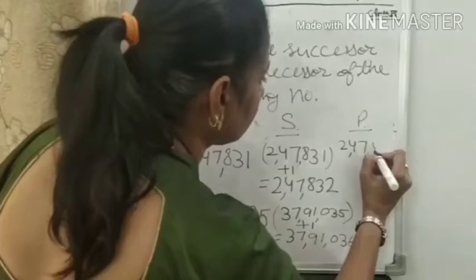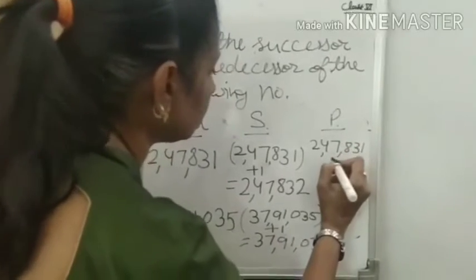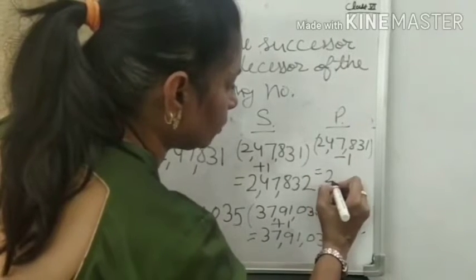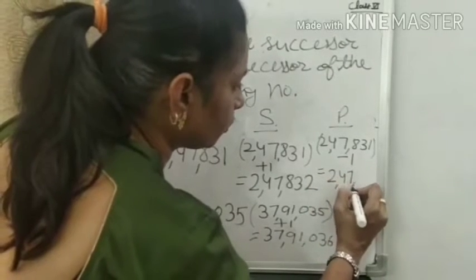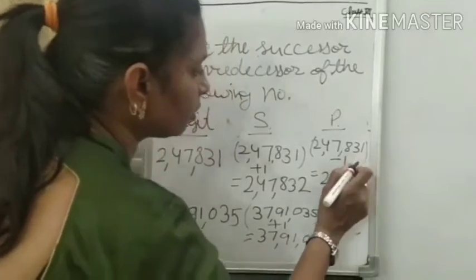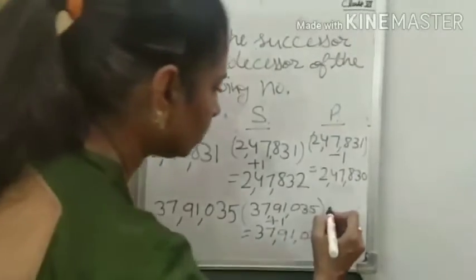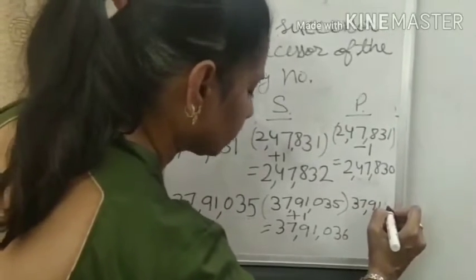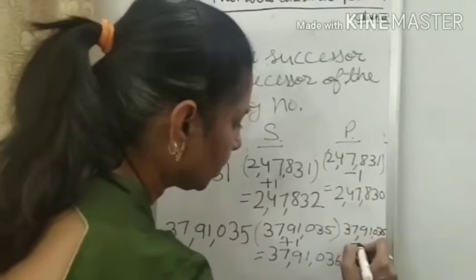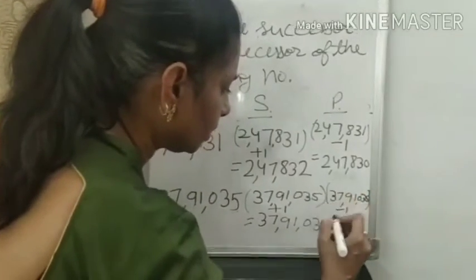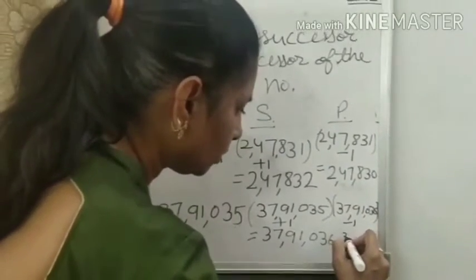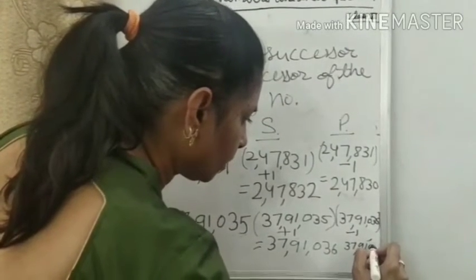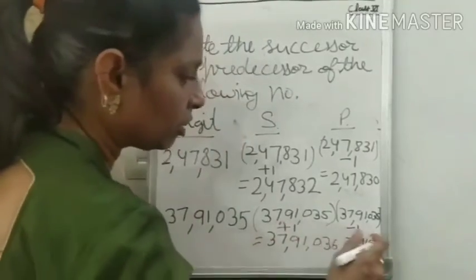Now for the predecessor: 2,47,831 minus 1. The answer is 2,47,830. Next, 37,9135 minus 1. The answer is 37,9134.